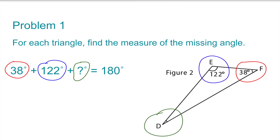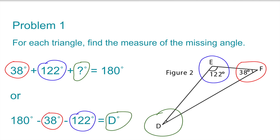The missing angle in figure 2 is angle D. Angle F is 38 degrees and angle E is 122 degrees, so 38 degrees plus 122 degrees plus angle D will equal 180 degrees. Or, 180 degrees minus 38 degrees minus 122 degrees will equal angle D. The measure for angle D is 20 degrees.